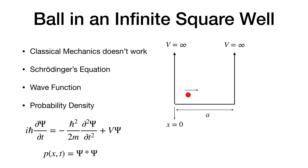If we're going to teach it, let's teach it in a way that's at least partly right. For a quick overview: suppose I have a ball moving back and forth between these walls — we call them infinite potentials, meaning the potential is infinity beyond those walls and the ball cannot penetrate at all.